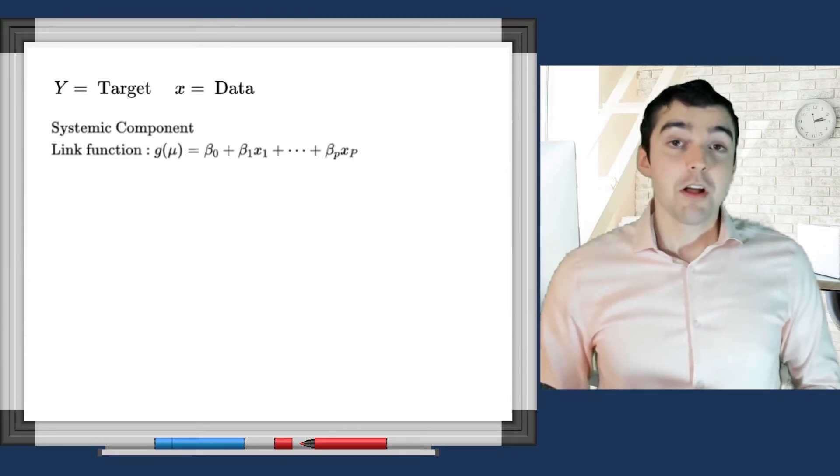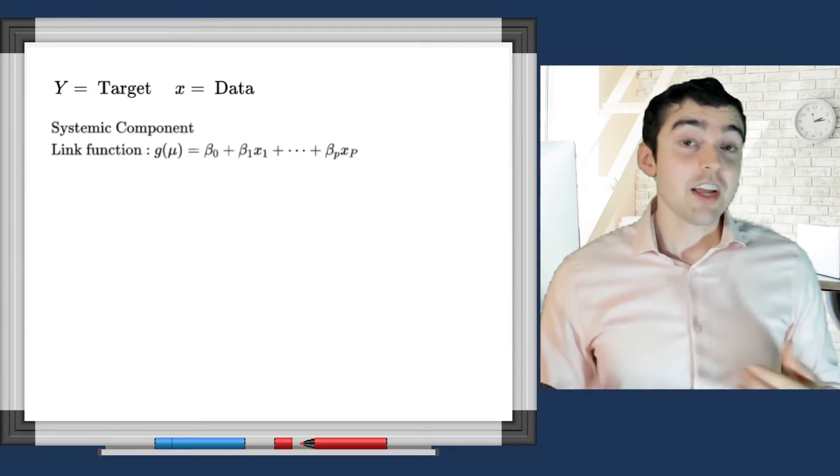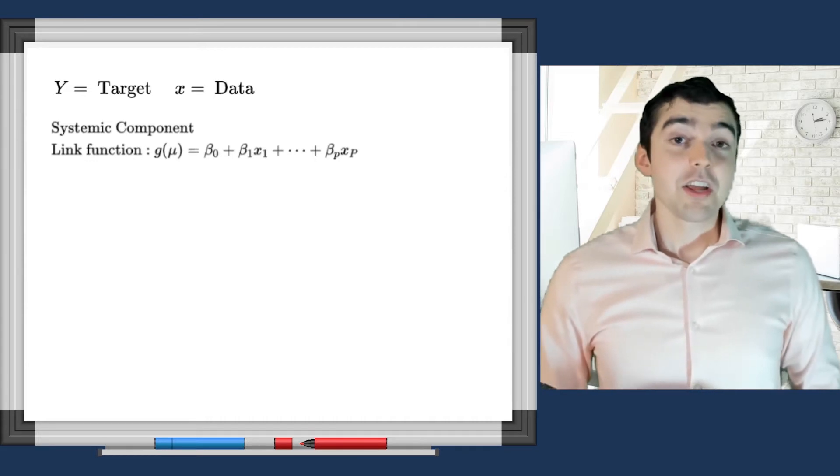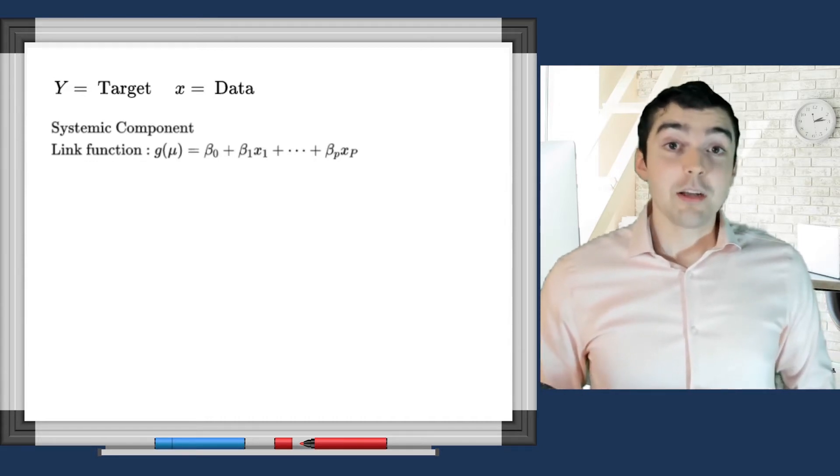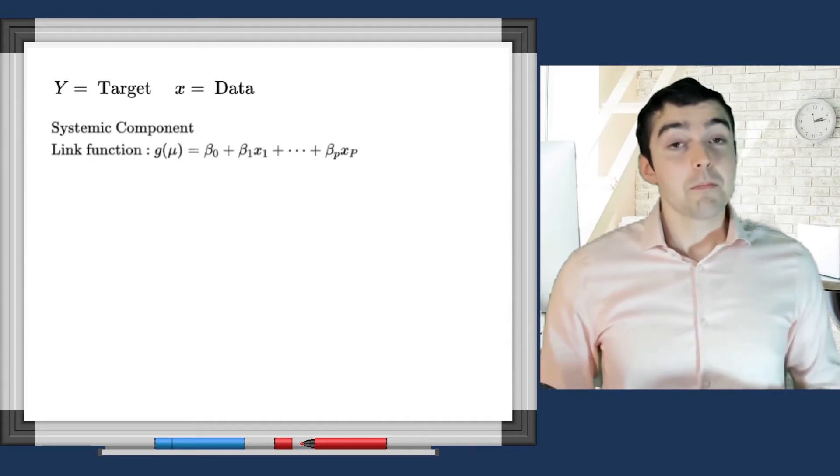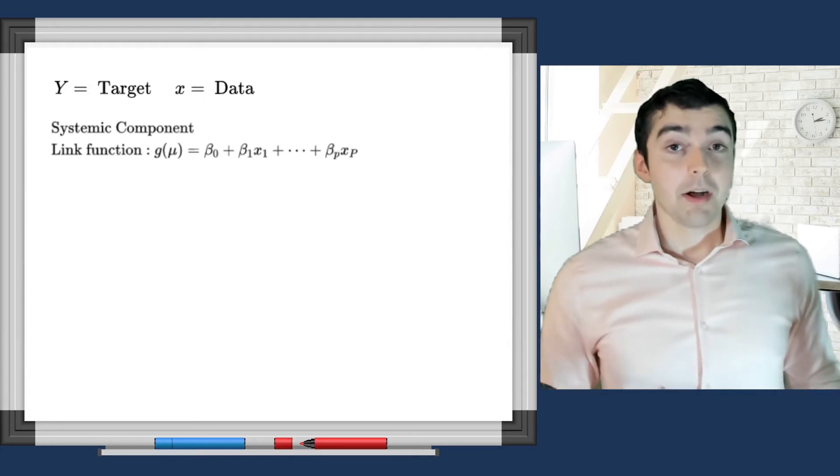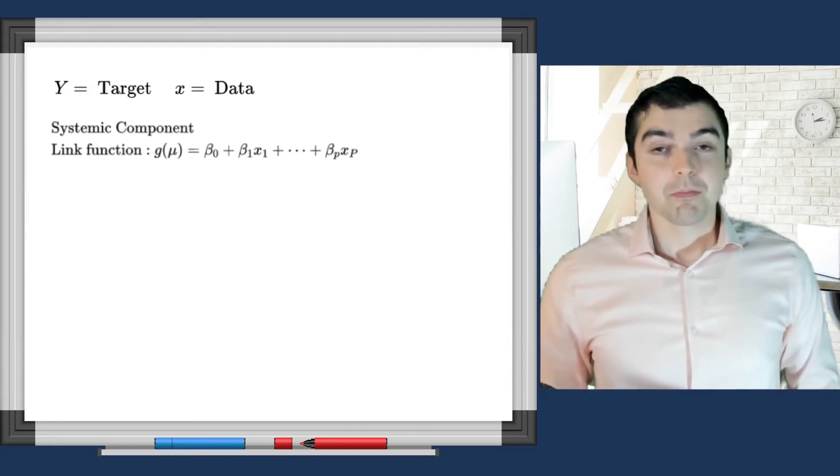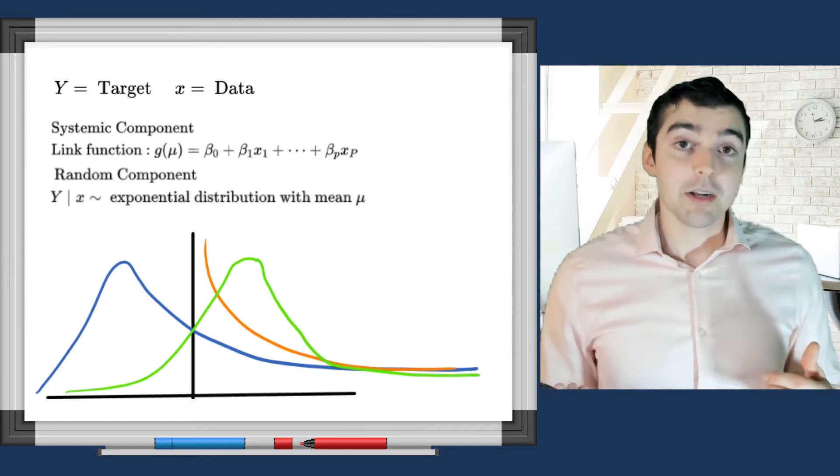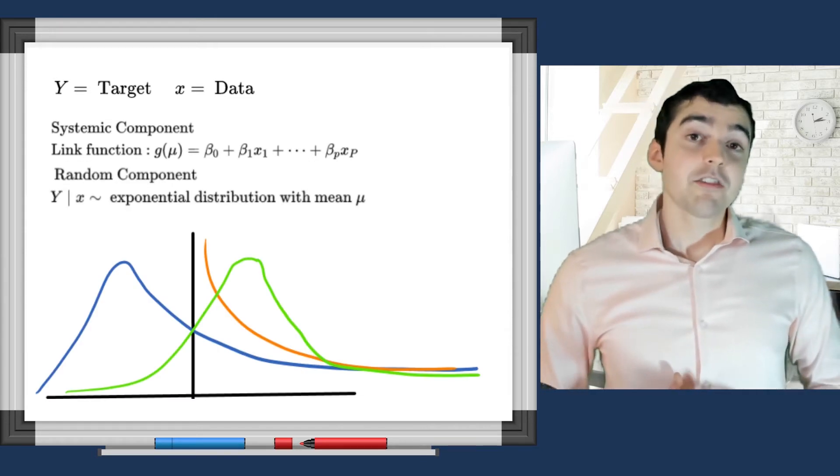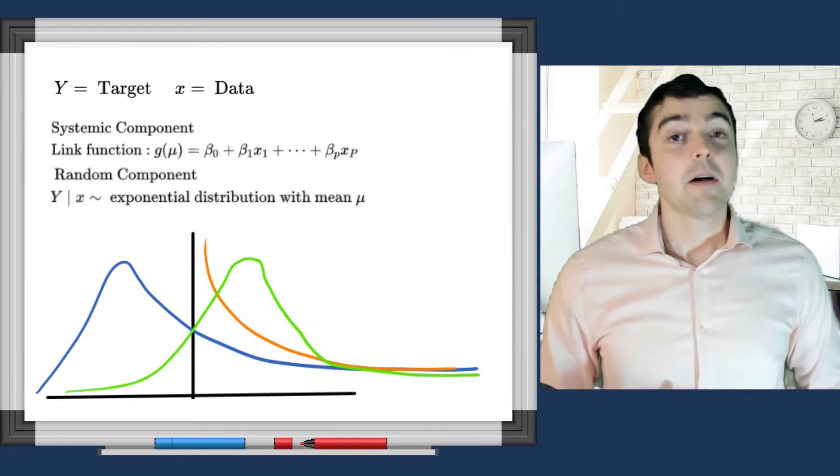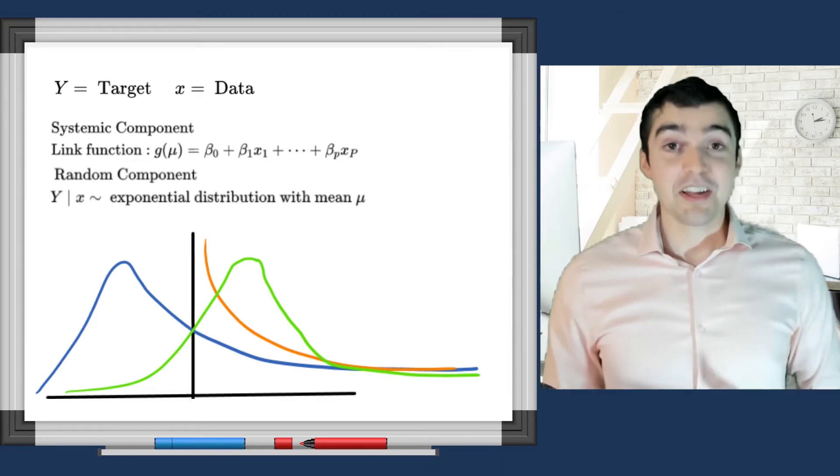In other words, if G is the link function, G of mu is equal to the coefficients multiplied by all of the variables. The second item is that the distribution can take any family that is exponential.